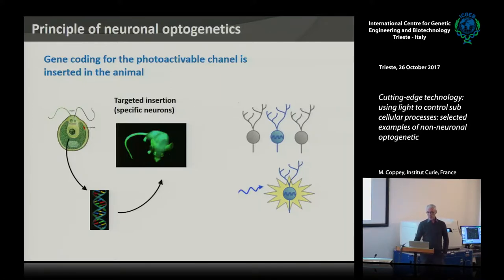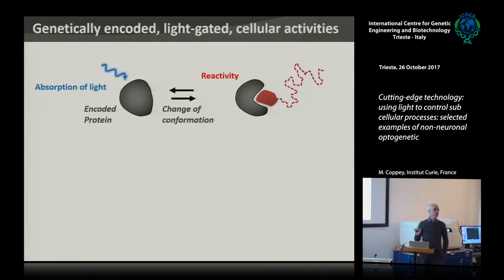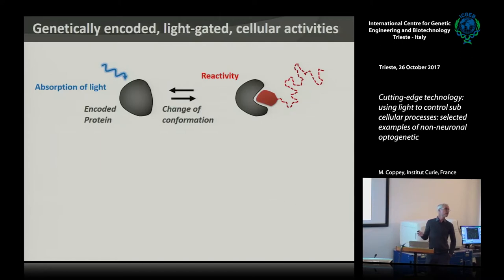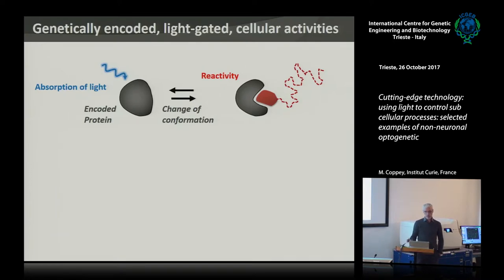That was for neurobiology, but the same idea has been developed for cellular activities. The idea is similar: you take proteins that are light-gated, but not ion channels — another kind of protein where absorption of light will not give rise to ion emission like in fluorescence microscopy, but to some kind of conformational change that drives reactive processes. This has been really emerging over the last seven or eight years, and it's increasing very fast — most cellular processes have now been put under the control of light.